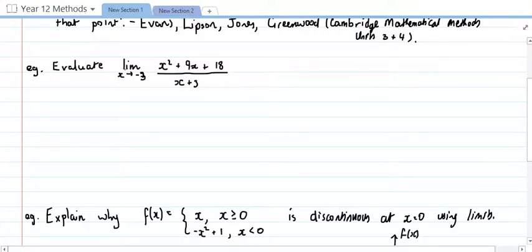We're evaluating the limit as x approaches negative 3 of this. And we can see if we sub negative 3 in, we're going to make the denominator 0, so it would be undefined. But there is a way that we can work around that. So in this case, what I'm going to do is I'm going to simplify this fraction. So I'm going to do the limit as x approaches negative 3.